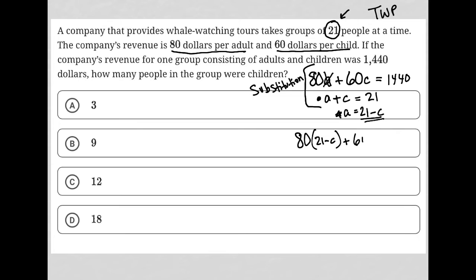I have plus 60C equals 1440. I now have an equation that only has C involved, so now I can just solve for C and find my answer. I'm going to grab my calculator and figure out what is 80 times 21. It's 1680.